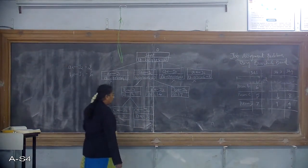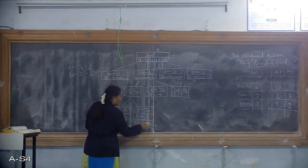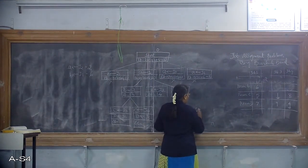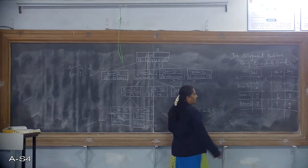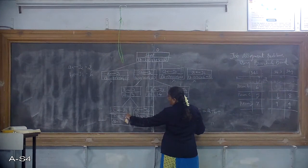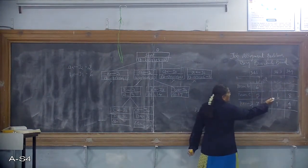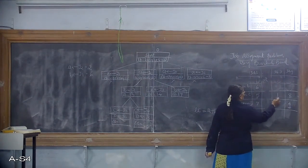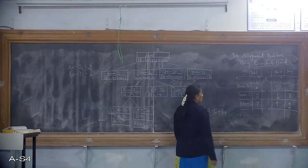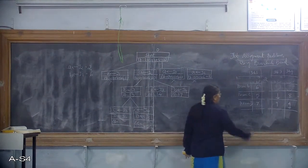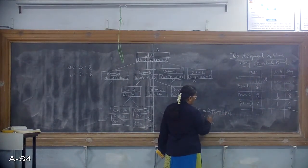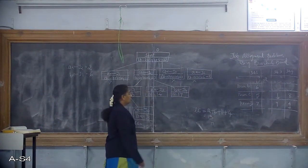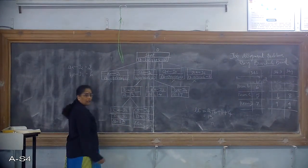Now calculate the least cost value. When J3 is assigned to C and J4 is assigned to D: cost for J3 to C is 6, cost for J4 to D is 4. So the calculation gives 6 plus 4 plus 3, which equals 13. The least cost value for this node is 13.